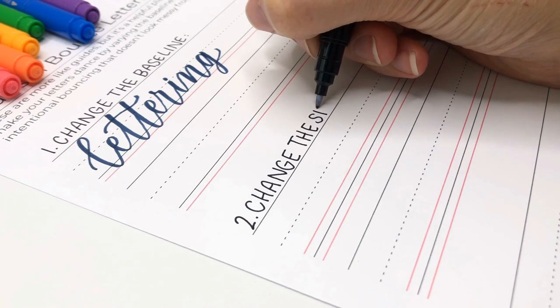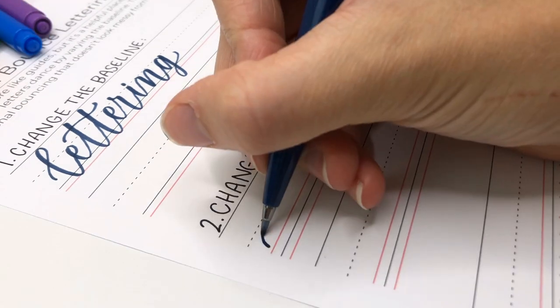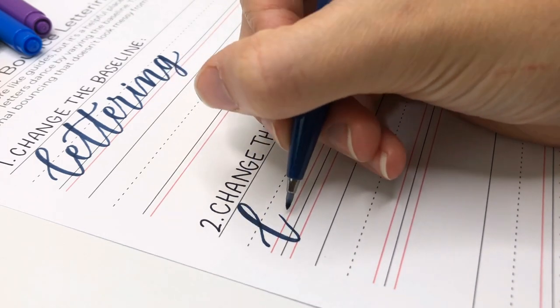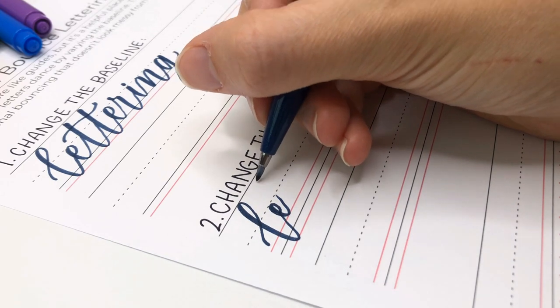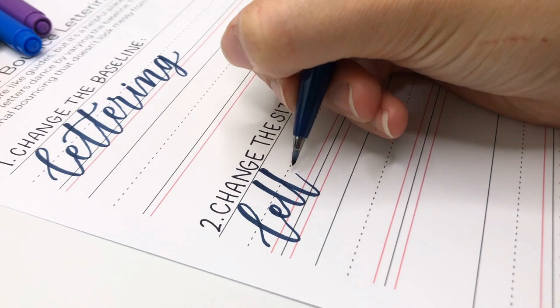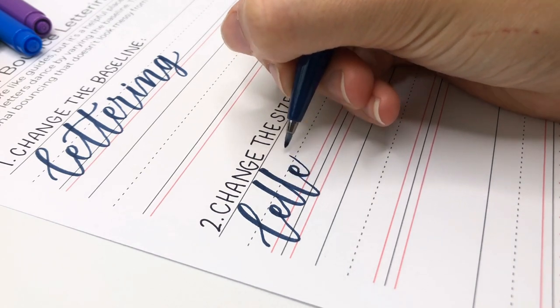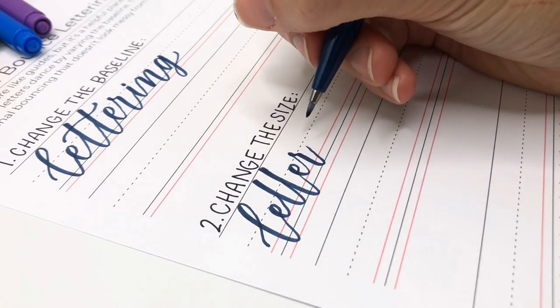Number two, changing the size. Besides just adding another baseline, the next level is to change the size. To stay consistent, you can draw more lines. This helps your letters to still be in the same line so it doesn't look messy. It also helps you to know how far above or below the baseline to go. The goal is to have a few different sizes for your letters for even more of a bouncing effect.